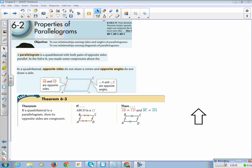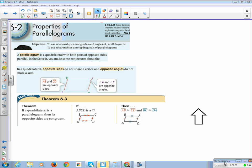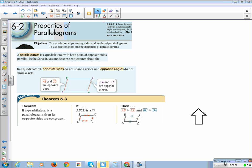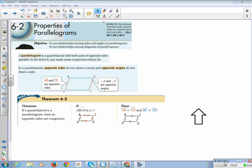All right, so this is Chapter 6, Lesson 2, Properties of Parallelograms. Our learning objective is to use relationships among sides and angles of parallelograms and to use relationships among diagonals of parallelograms. Just to remember, a parallelogram is a quadrilateral with both pairs of opposite sides parallel. In a quadrilateral, opposite sides do not share a vertex. Opposite angles do not share a side.